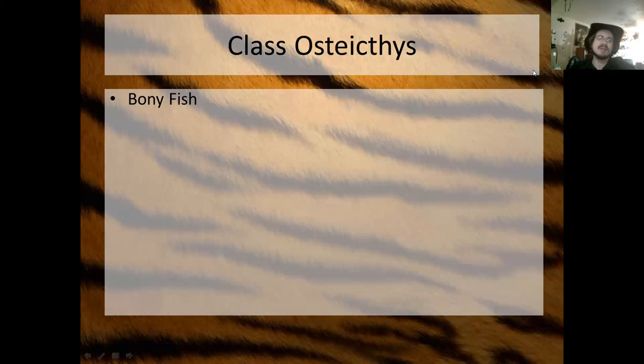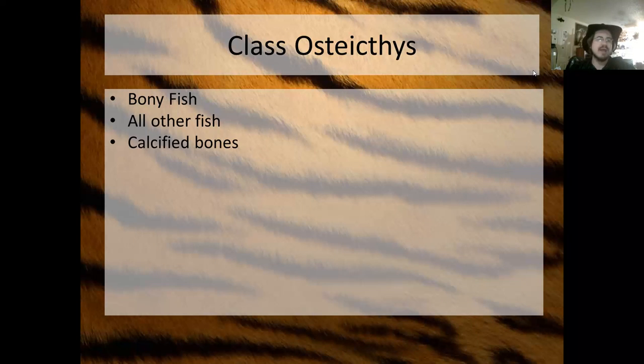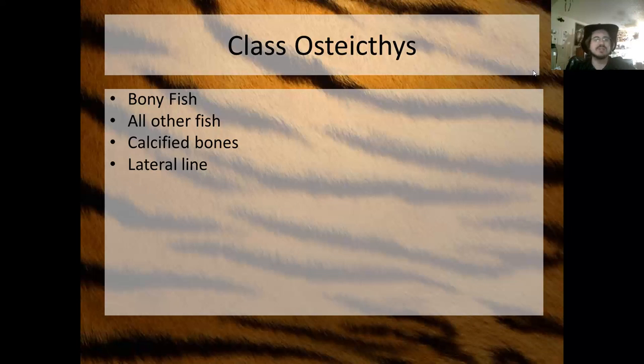Osteichthyes fish have jaws and they have calcified bones like ours. They have a lateral line system just like the sharks.